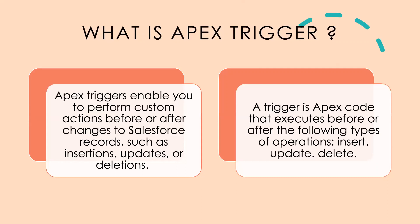You want to perform that particular action before our DML operation gets executed or even after the DML operation gets executed. So what will you do in that case? You can go ahead and write a trigger. In that trigger, you can specify the criteria and you can also specify when that trigger should be fired. For example, let's say if you're inserting an account record and you want to perform some kind of validation before the account record is inserted into the database, let's say you want to validate that the phone number digits should not be more than 10 and not less than 10.